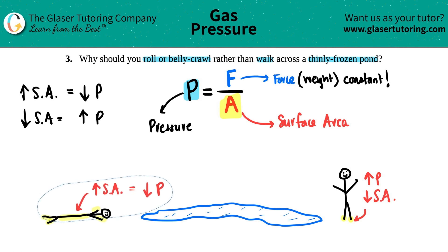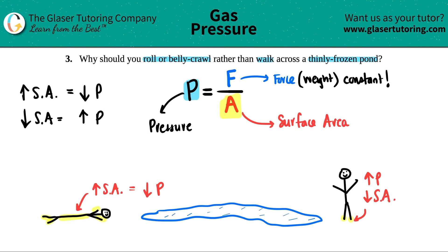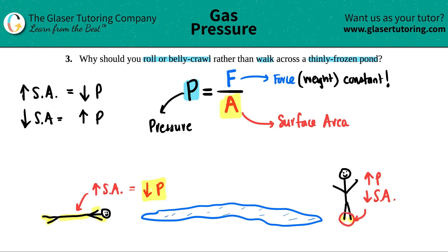So this is the reason why you would belly crawl: more surface area gives you less pressure, and the ice is not going to crack. But if you put all your pressure on your feet — lower surface area — the ice would likely crack because there's much more pressure. Hopefully this helped! Let me know in the comments, and I hope you're having a great day. Let's keep studying hard and I'll see you in the next lesson!